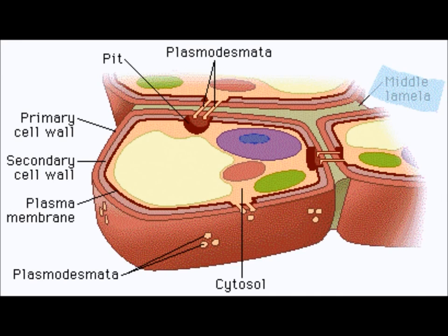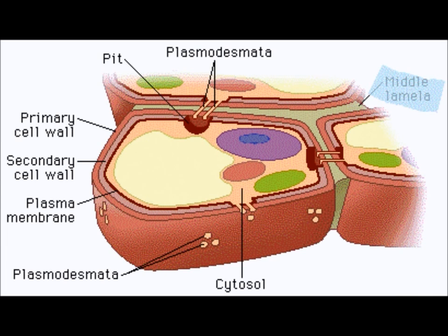The plant cell wall is composed of a primary wall and a secondary wall. The primary wall surrounds growing cells, or cells capable of growth, and a secondary wall is a thickened structure containing lignin and surrounds specialized cells such as vessel elements or fiber cells.